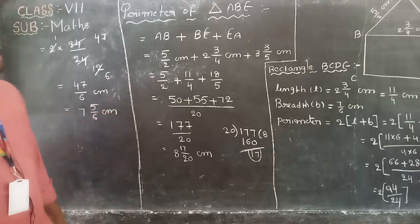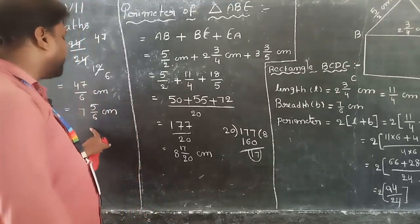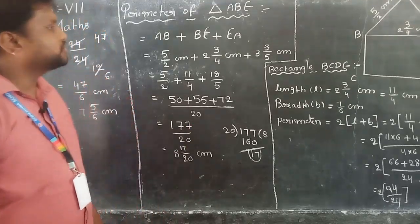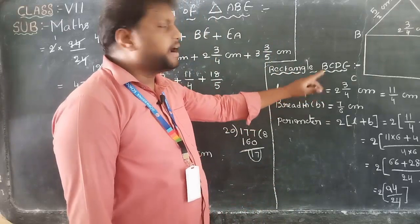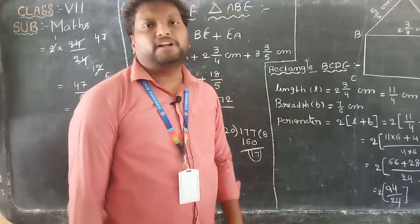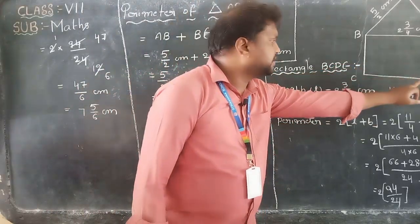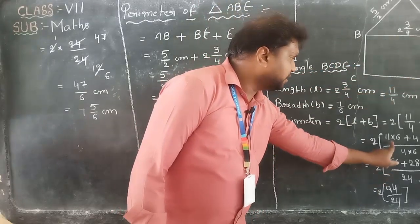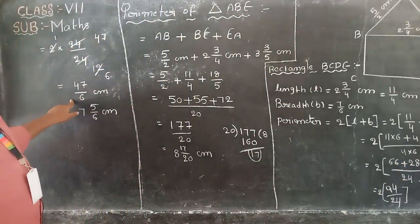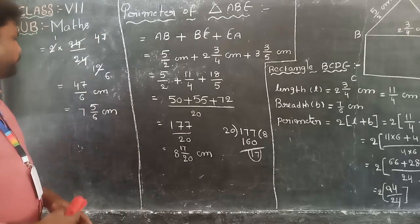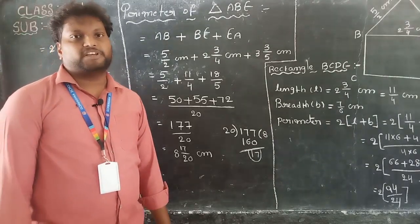This is the perimeter of rectangle, and this is the perimeter of triangle. Given one triangle and rectangle in the figure — we take the measurements and apply the formula. Perimeter of rectangle = 2 into (L + B): with L = 11/4 and B = 7/6, cross multiply to get 66 and 28, after cancellation we get 47/6, which as a mixed fraction is 7 and 5/6 cm. Thank you students. Today we discussed some problems. Next class we will continue with the remaining topics. Thank you.